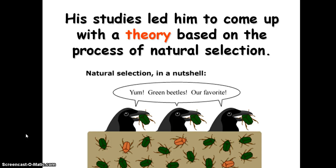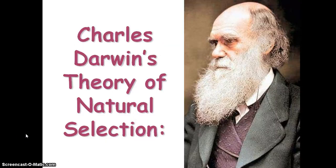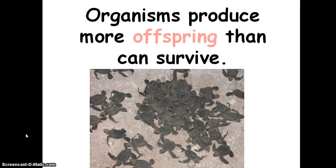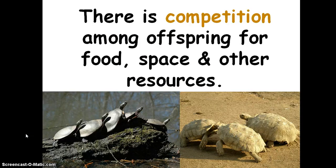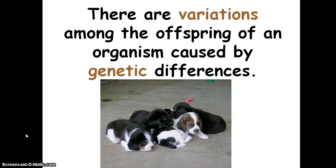Darwin's studies led him to come up with a theory based on the process of natural selection. In this picture, birds are eating the green beetles more preferentially than the orange beetles, so the green beetles have a disadvantage. Darwin's theory of natural selection states that organisms produce more offspring than can survive, and there is competition among offspring for food, space, and other resources.